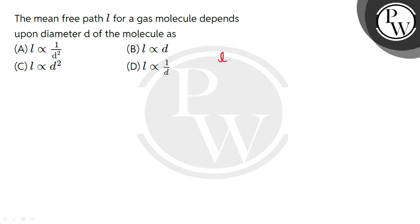See the mean free path L, what is the formula? That is 1 upon root 2 pi n d squared.